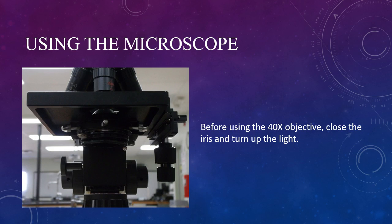Before going to 400x total magnification, we need to adjust the setup a little bit. We'll turn up the light using the brightness adjuster, and then close up the iris located under the condenser lens. This is done with a small peg that slides back and forth.